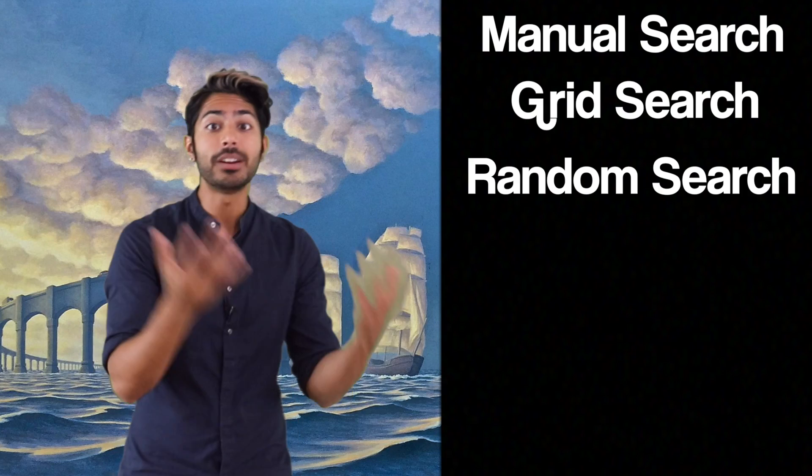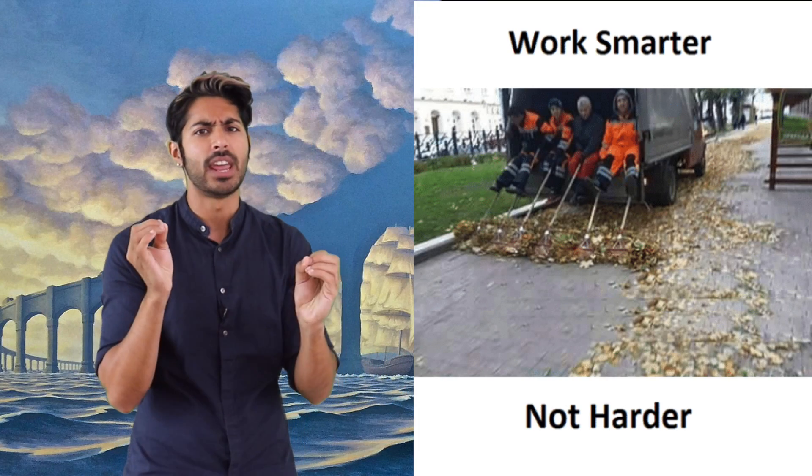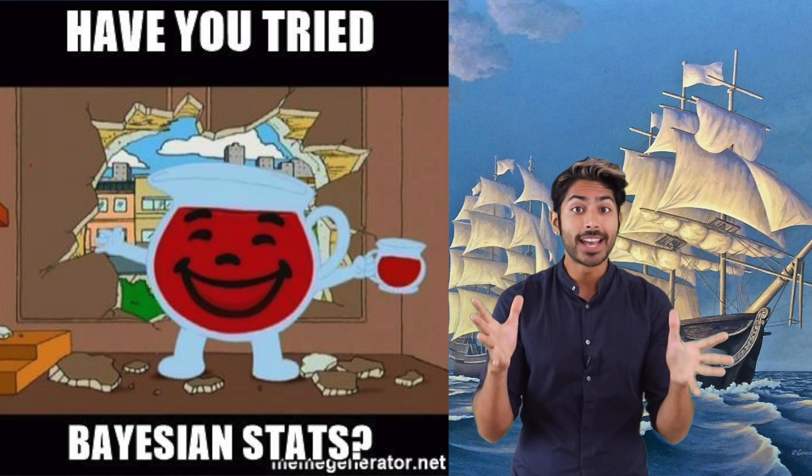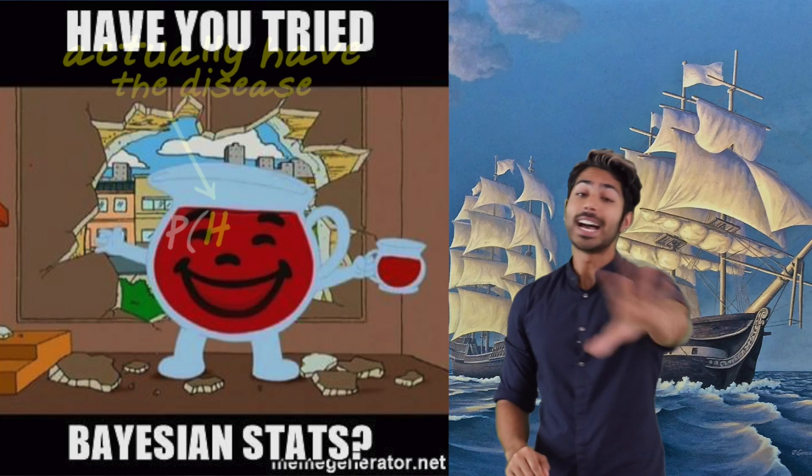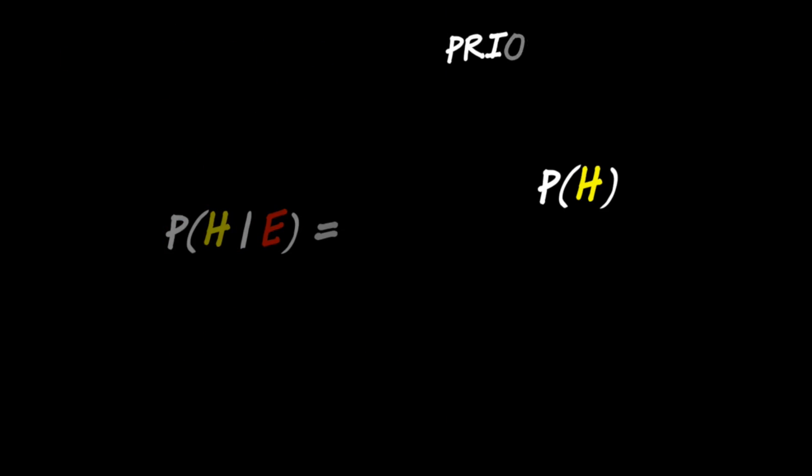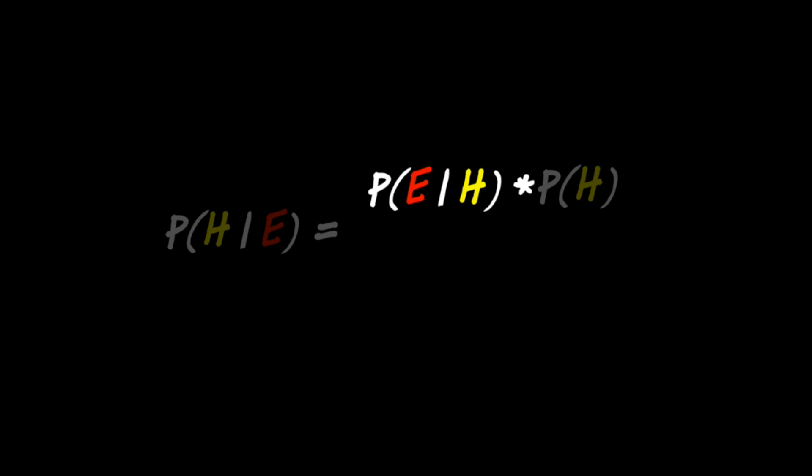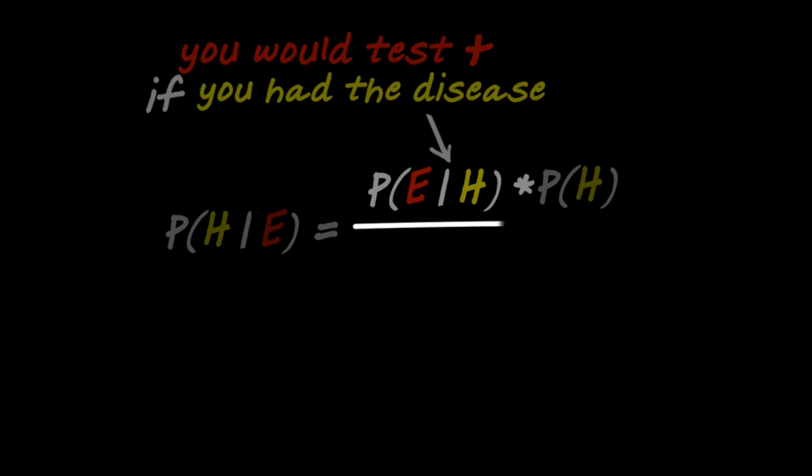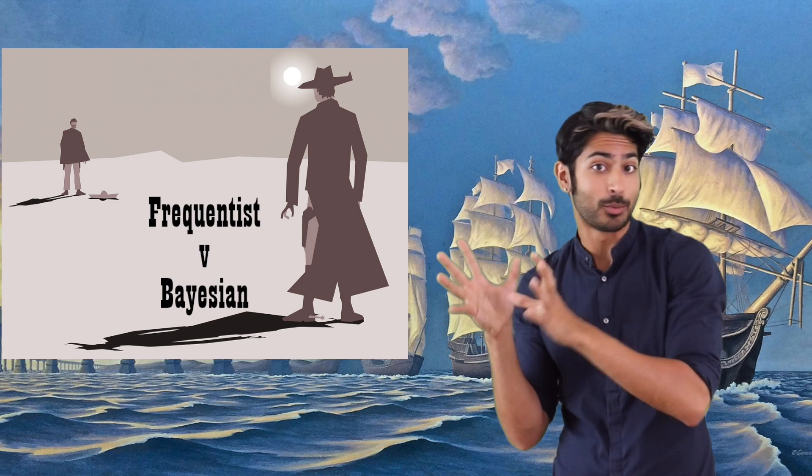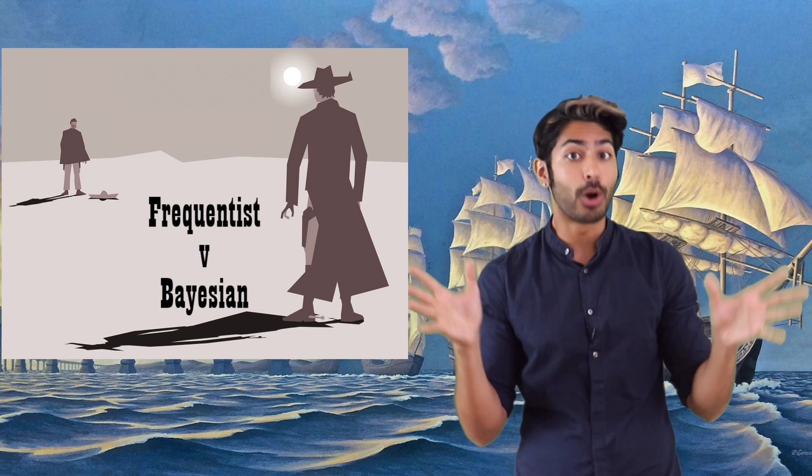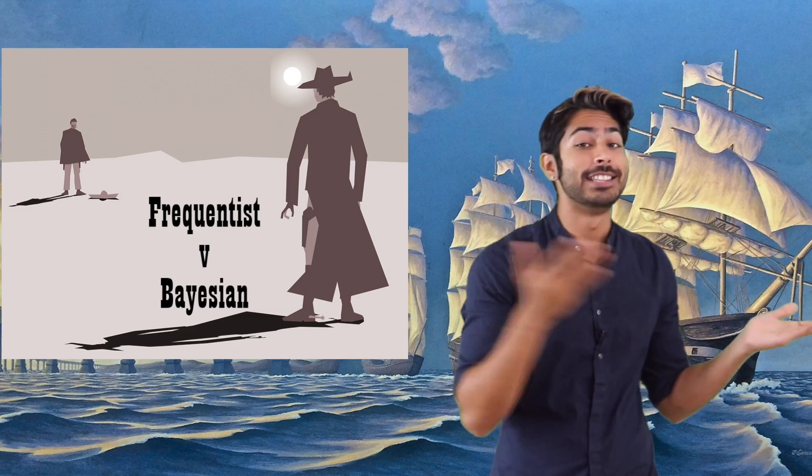So manual search, grid search, and random search are all fine and dandy, but there's got to be a more intelligent way of doing this that incorporates learning. One technique that's very popular right now is called Bayesian optimization. Last episode we talked about how Bayes' theorem is a way to determine conditional probability. It shows us how to update an existing prediction given new evidence. This forms the basis of the Bayesian way of thinking, as opposed to the frequentist way of thinking. These are the two different approaches to probability. Basically, it's like a mathematical gang war between applied statisticians.